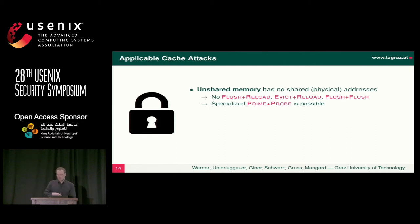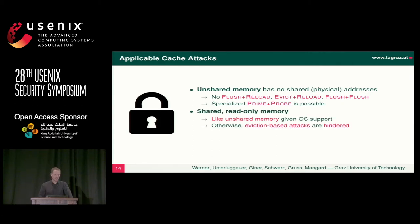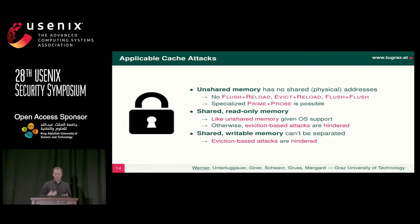In terms of security, we distinguish three cases. First, completely unshared memory — each process has its own memory, no shared physical pages, so Flush+Reload-style attacks don't work anyway, though Prime+Probe stays applicable. Second, shared read-only memory — here we can use domain ID support to bring us back to the unshared memory setting. Third, shared writable memory — here cache attacks are kind of pointless because the attacker already has access to the data.